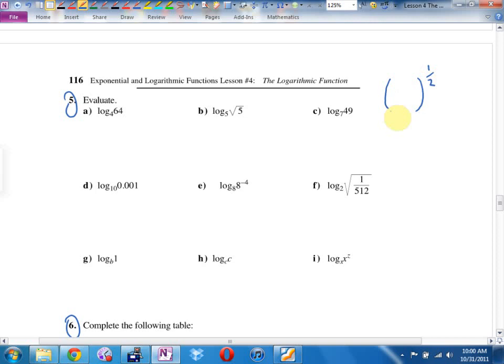Get up the fingers. 2, 4, 8, 16, 32, 64, 128, 256, 512. 2 to the ninth is 512, so 1 over 512 is 2 to the negative 9. Is that okay so far?